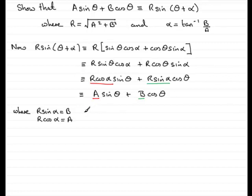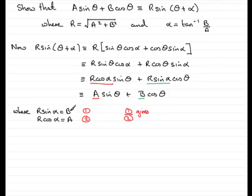If I divide equation 1 by equation 2, r sin α divided by r cos α equals b divided by a. The r's cancel, leaving sin α over cos α equals b over a. And sin α divided by cos α is better known as tan α. So tan α equals b divided by a.